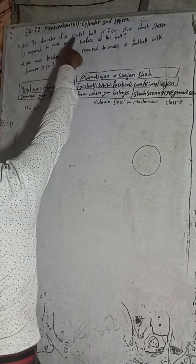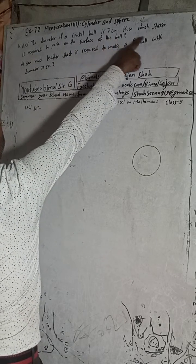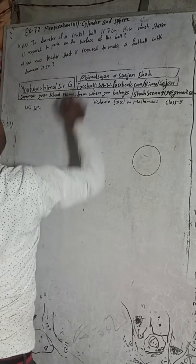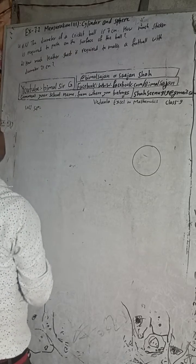Hi class 9 and 10 students, welcome back to Bimal Sarji's YouTube channel. This is question number 4C, Exercise 7.2 Mensuration, third part: cylinder and a sphere, Vedanta Excel in Mathematics class 9. The question is: the diameter of a cricket ball is 7 cm — how much sticker is required to paste on the surface of the ball?